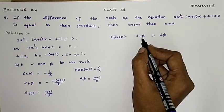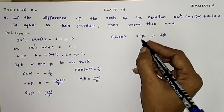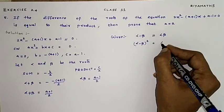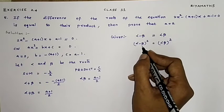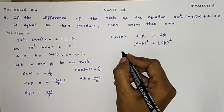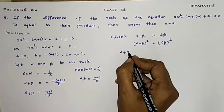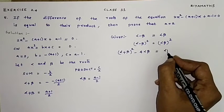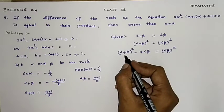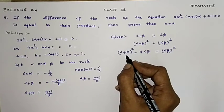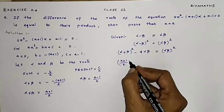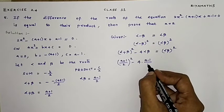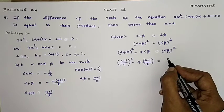Since alpha minus beta appears, we use the algebraic formula and square both sides: (alpha minus beta)² equals (alpha times beta)². We apply the formula: (alpha minus beta)² equals (alpha plus beta)² minus 4·alpha·beta, so (alpha plus beta)² minus 4·alpha·beta equals (alpha·beta)².